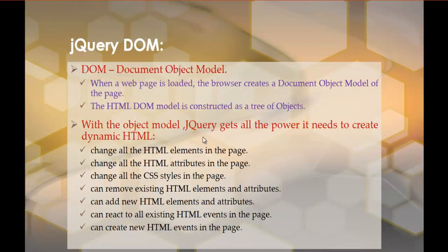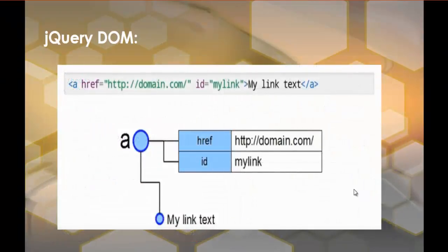Once jQuery has this DOM model, it's very easy for jQuery to create dynamic HTML. It can change all the HTML elements in the page, change all the HTML attributes in the page, change all the CSS styles, remove existing HTML elements and attributes, add new HTML elements and attributes, react to all existing HTML events, and create new HTML events in the page. This is the advantage of using your DOM. What DOM is—once you get that object model, what all you can do with jQuery is these things. I hope you understood what is DOM.